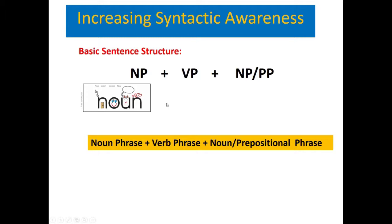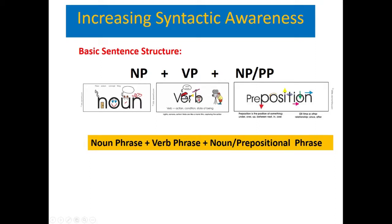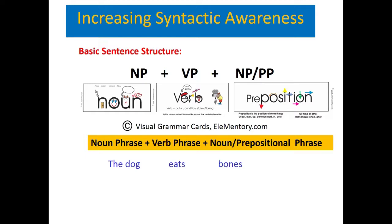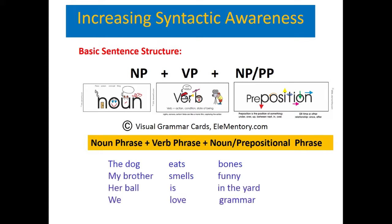Here's the verb card — a verb is an action or a state of being. And preposition is basically some sort of position like over, down, across, up, through, or some time expression like since or after. Examples following basic phrase structure: 'The dog eats bones.' 'My brother smells funny.' 'Her ball is in the yard.' 'We love grammar.' All of those follow the basic phrase structure sentence.